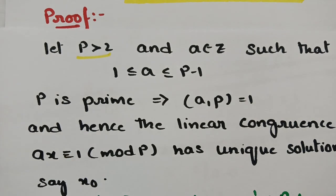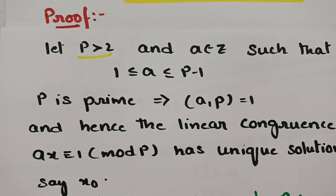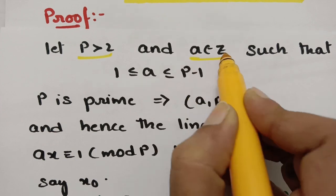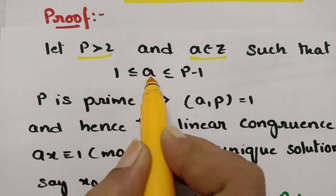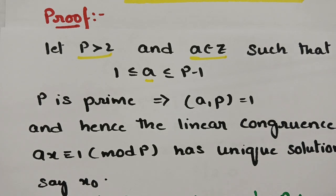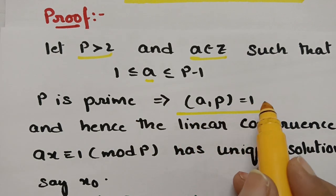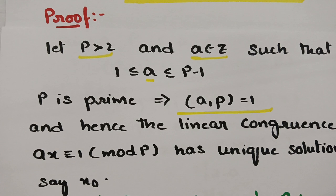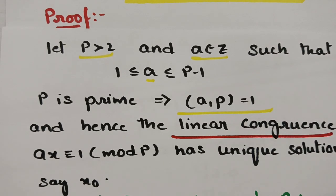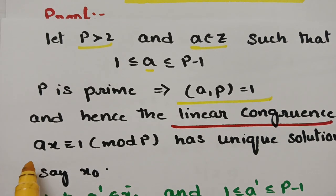Now let p > 2. Let a be any integer with 1 ≤ a ≤ p−1. Since p is prime, gcd(a, p) = 1. Then by linear congruence theory, the linear congruence ax ≡ 1 (mod p) has a unique solution.